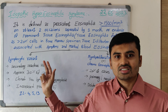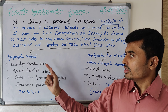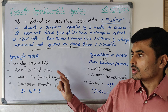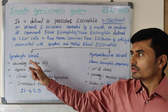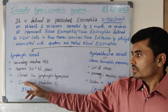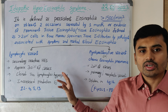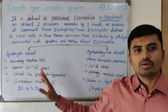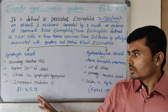The lymphocytic variant is a secondary reactive hypereosinophilic syndrome. Approximately 30% of cases belong to this variant. There is clonal T helper 2 lymphocyte hyperplasia and increased production of interleukins 4, 5, and 13.